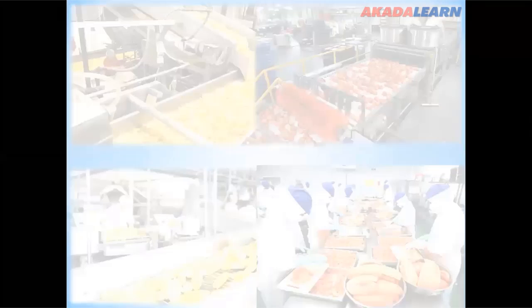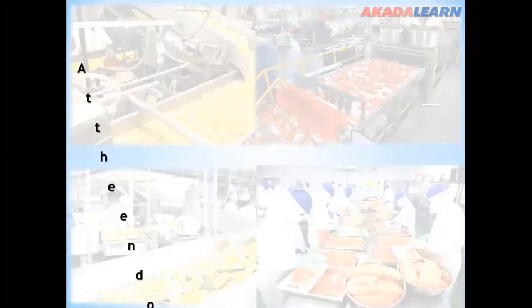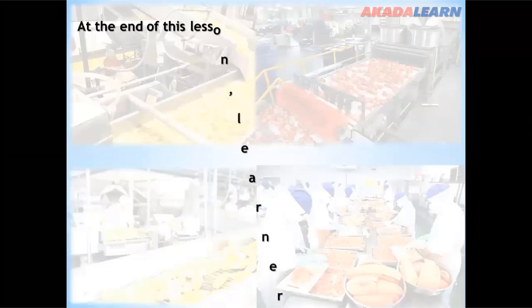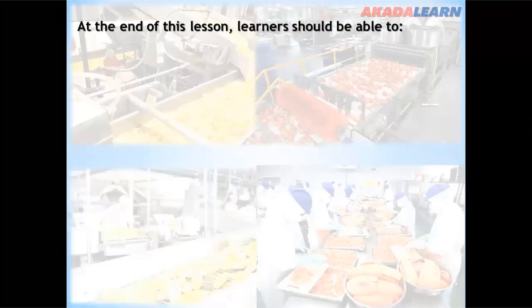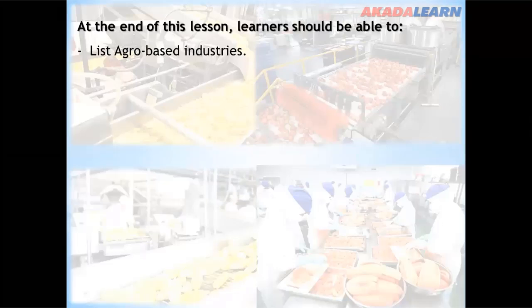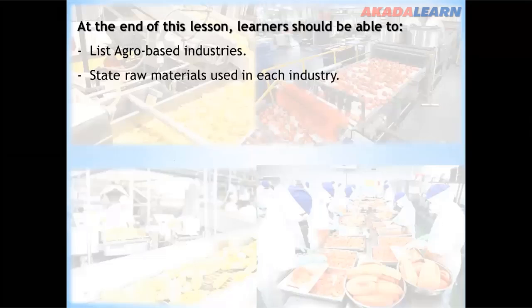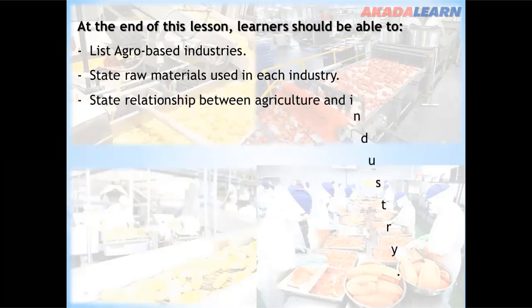At the end of this lesson, learners should be able to list agro-based industries, state raw materials used in each industry, and state the relationship between agriculture and industry.